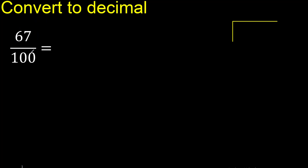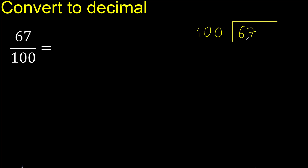67 divided by 100. 67 is less, therefore complete — always complete with 0. Here: 0 point.